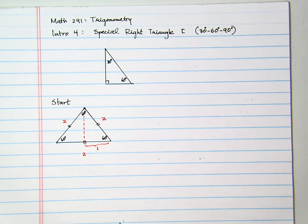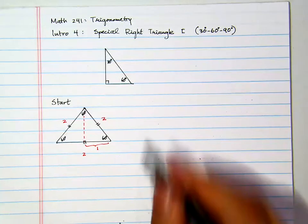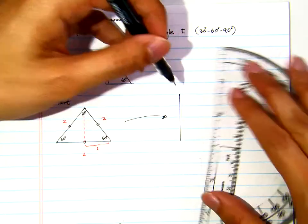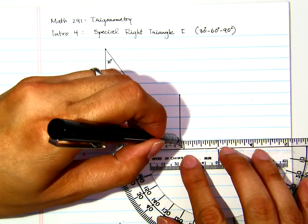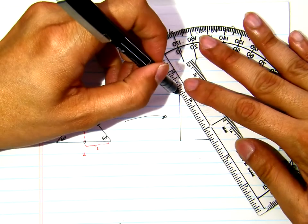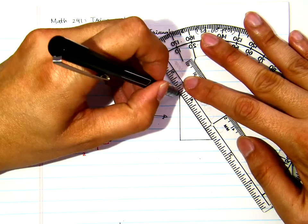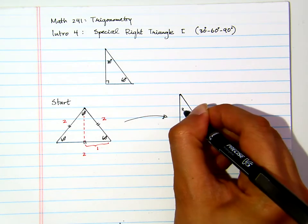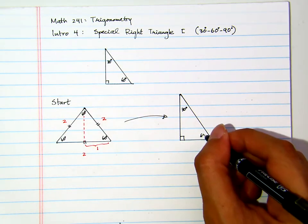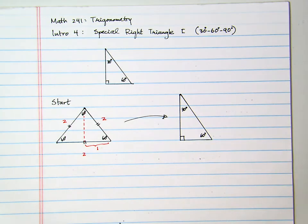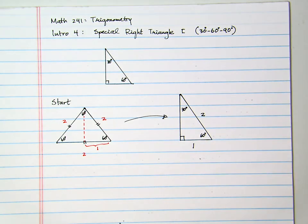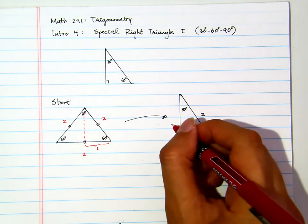Now let's pull that triangle out. We will be looking at this triangle here — let me zoom in a bit. This is my 30 degree angle, because I divided it into two by angle bisection. And here is 60 degrees. From the picture, we have: this side is two and this side is one.